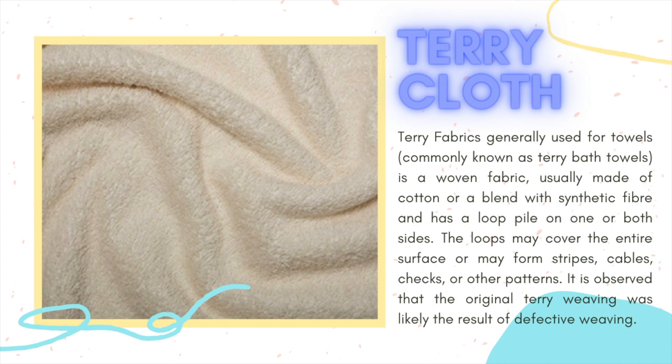Terry cloth. Terry cloth fabrics, generally used for towels and commonly known as terry bath towels, are woven fabrics usually made out of cotton or a blend with synthetic fiber, having a loop pile on one or both sides. The loops may cover the entire surface or may form stripes, cables, checks, or other patterns. It is observed that original terry weaving was likely the result of defective weaving. The name terry comes from the French word tyrel, meaning to pull out, referring to the pile loops which are pulled out by hand to make absorbent traditional Turkish toweling. The classification of towels can be made according to weight, production, pile presence on fabric surfaces, pile formation, pile structure, and finishing.